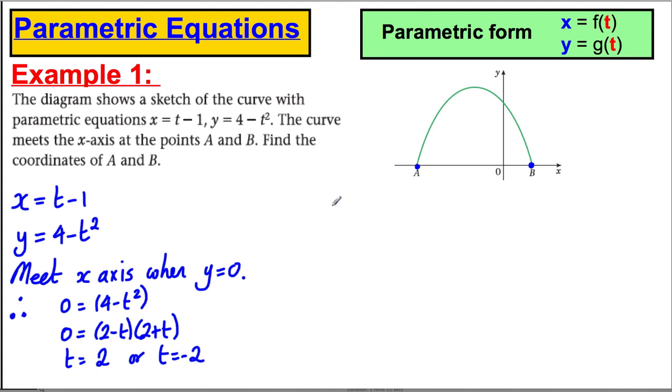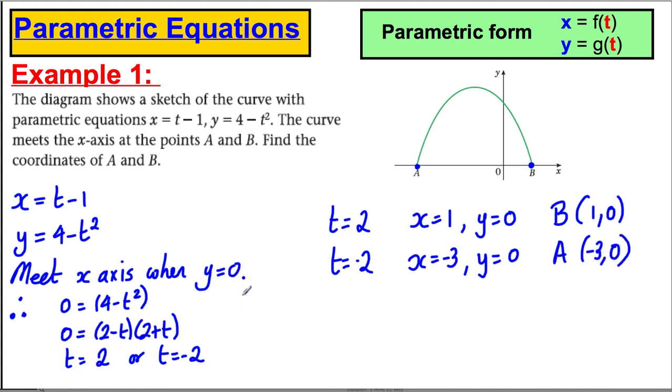So when t is 2, x would be 2 subtract 1, which is 1. And clearly, y is 0. We know that y is 0. So B must be the coordinates (1, 0). It's clear that this is B. So when t is negative 2, well, then x would be negative 2 subtract 1, so it would be negative 3, and y is clearly 0. So the coordinate A would be (-3, 0). It's very important to substitute your two t values back in and distinguish which one of A and B is each coordinate.